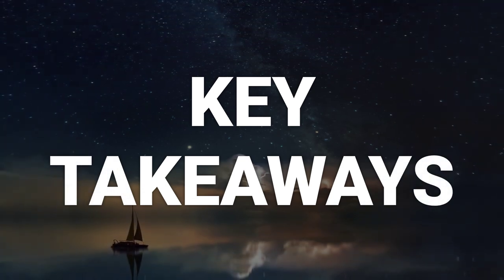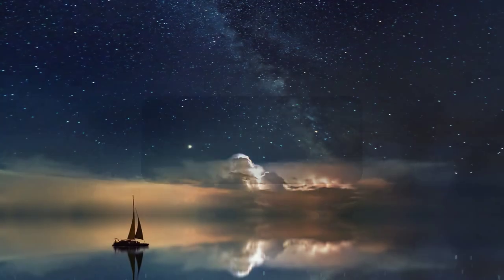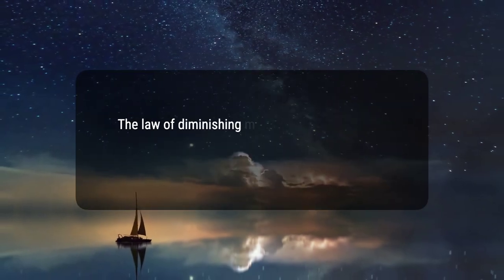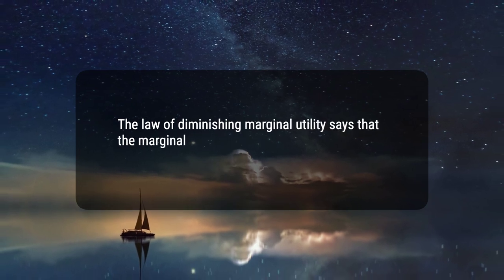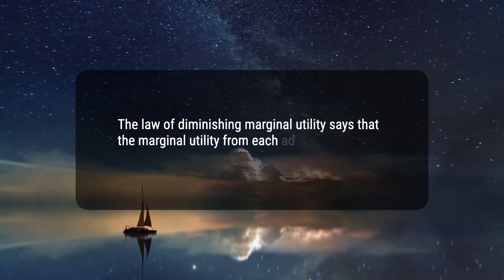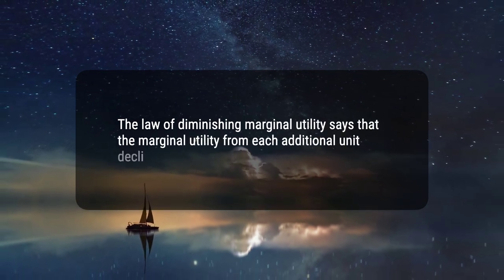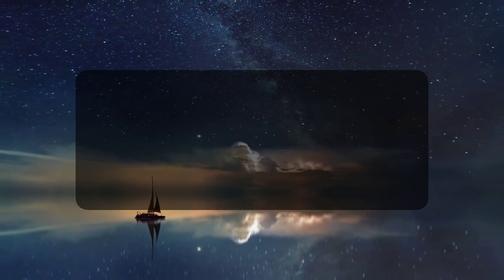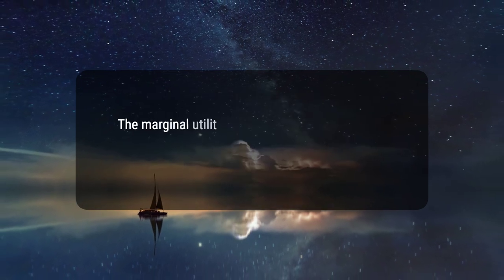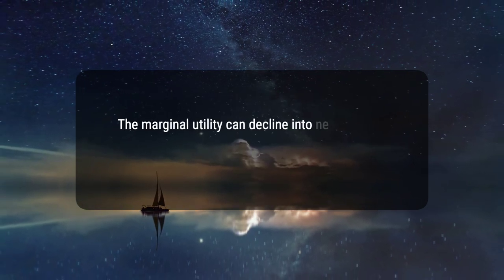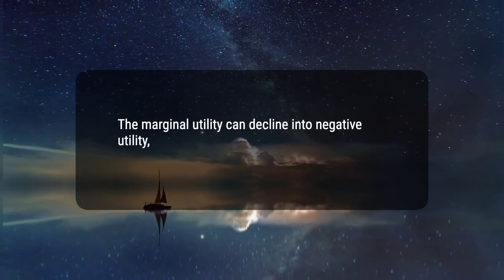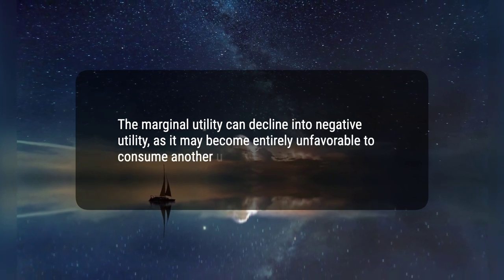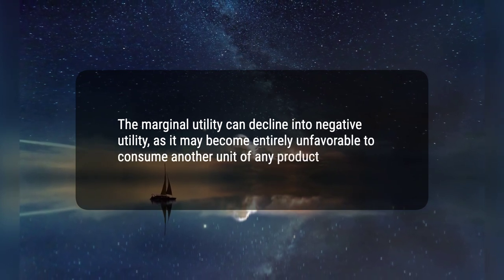Here are two key takeaways. First, the Law of Diminishing Marginal Utility says that the marginal utility from each additional unit declines as consumption increases. Second, the marginal utility can decline into negative utility, as it may become entirely unfavorable to consume another unit of any product.